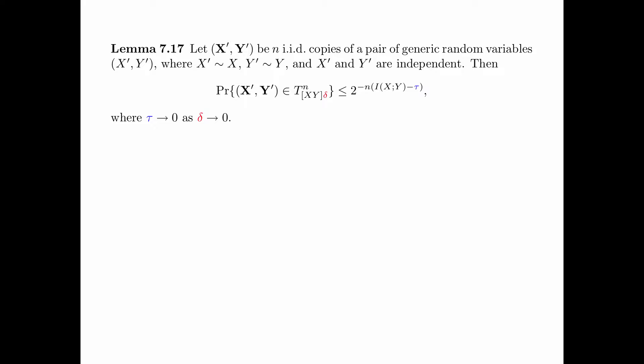The idea of this lemma is the following. Consider generating a sequence X' in an IID fashion according to distribution P(X), where the generation of X' and Y' are independent. The lemma says that the probability that the pair of sequences X' and Y', generated as such, is jointly typical with respect to the generic pair of random variables X, Y, is upper bounded by 2 to the power of minus N times the mutual information I(X;Y).